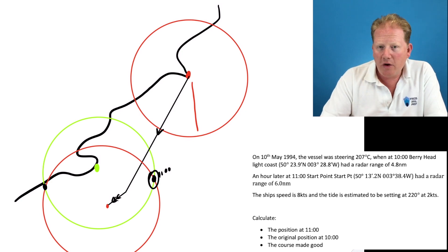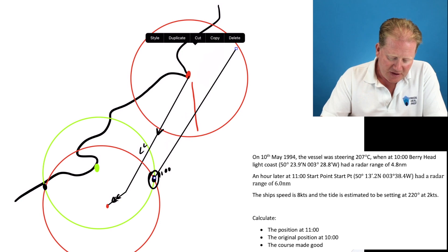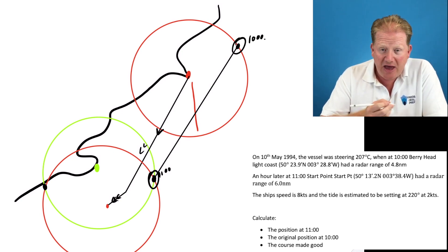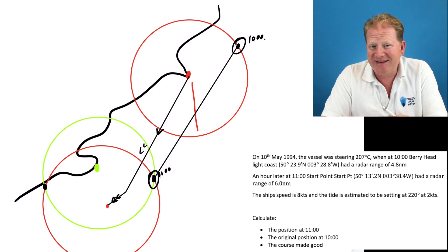To work out where we were an hour before, we include our ground track. So there's our ground track. And I'm going to copy that line and transfer it back. So that means if at 11 o'clock we are here, at 10 o'clock we must have been there. And that has allowed us to calculate our position at 11 and at 10 o'clock and our ground track. So we have answered question one.